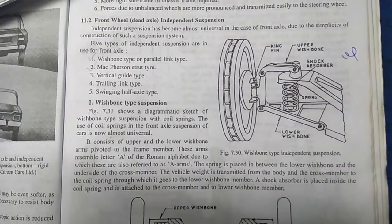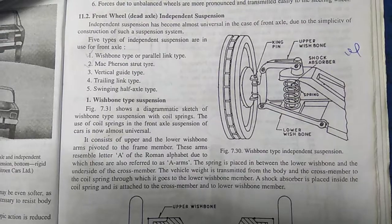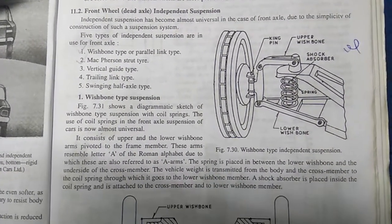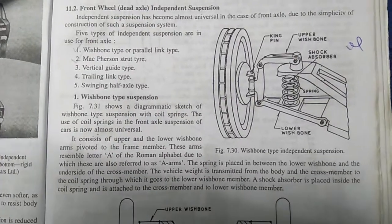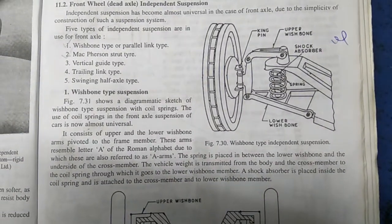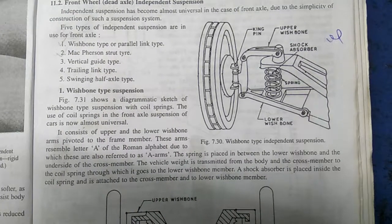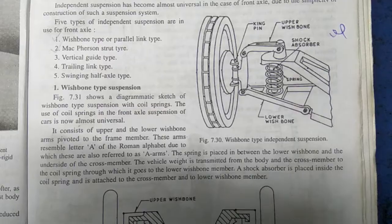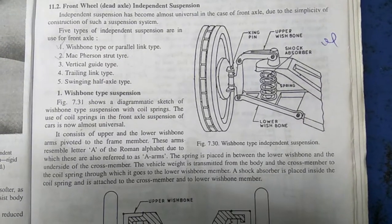Today we are going to discuss independent suspension, which comes under the suspension system. There are five types of independent suspension: wishbone type, MacPherson strut type, vertical guide type, trailing link type, and swinging half axle type. In this video, we will focus on the wishbone type suspension.